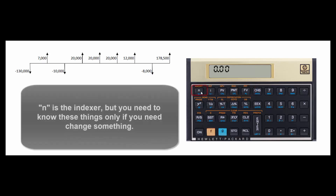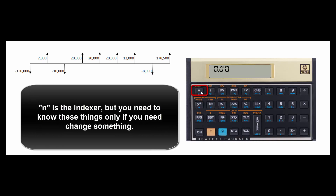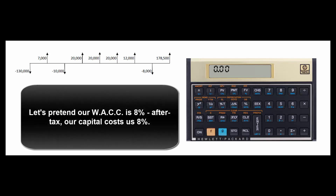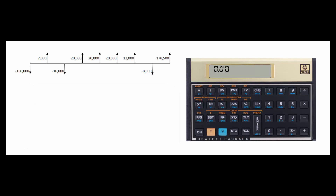The calculator also uses the N key to index everything, and you only need that information if you ever have to go back and change something. Now, let's pretend our weighted average cost of capital is 8% — our money costs 8%. We want to make investments on the left-hand side of the balance sheet that return more than 8%. Let's put this hypothetical cash flow into the calculator.